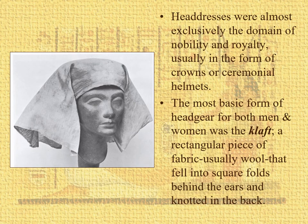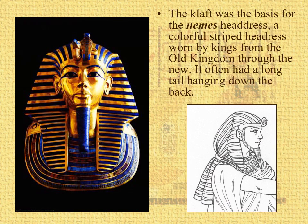The most characteristic headdress of the Egyptian period was the claft. Extremely easy to make — it is just a piece of rectangular fabric, usually wool, that fell into square folds behind the ear and was usually knotted or fastened somehow in the back. You can see that very characteristic one. This would become the basis for the nemes headdress, very characteristic of ancient Egypt. It is colorful and striped — probably painted, not dyed, so they did have color but it's not colorfast. It had a tail hanging down, usually with some kind of clasp, and you can see the clip-on beard.